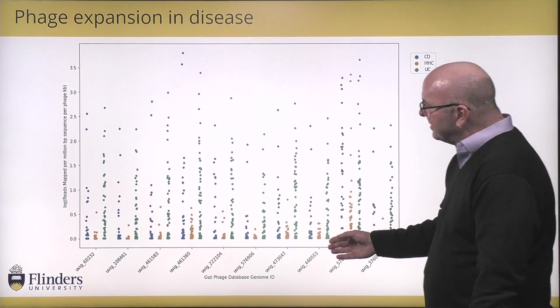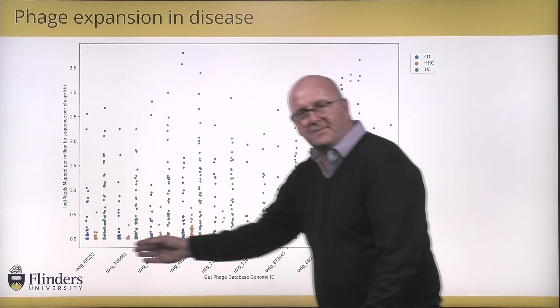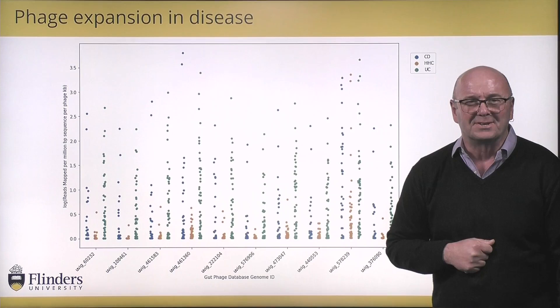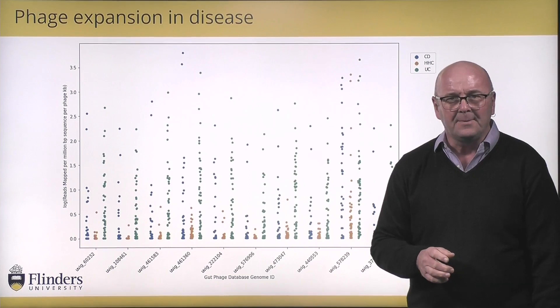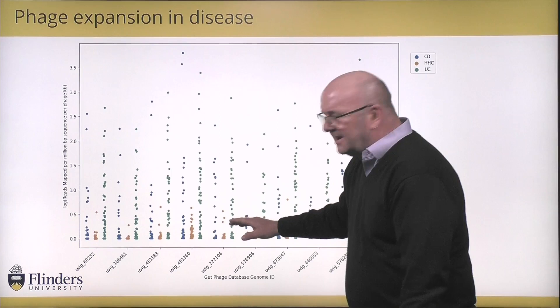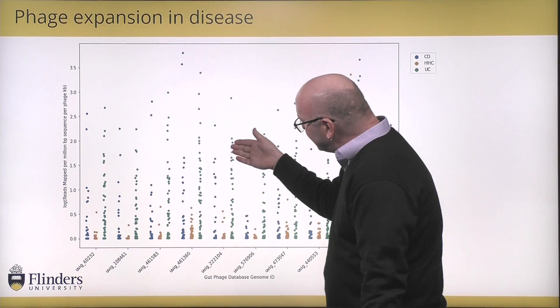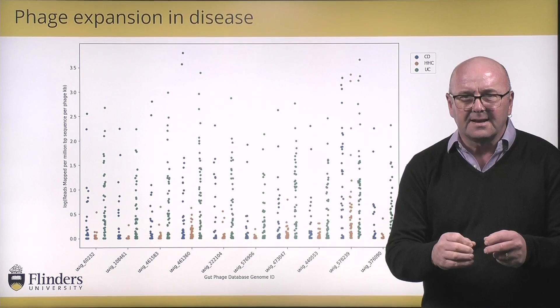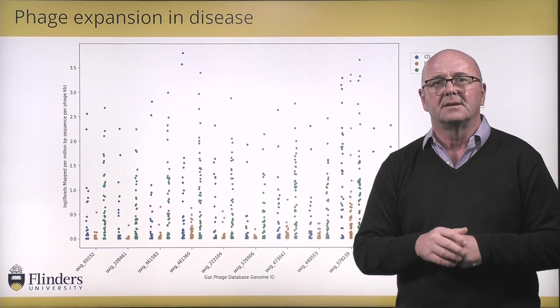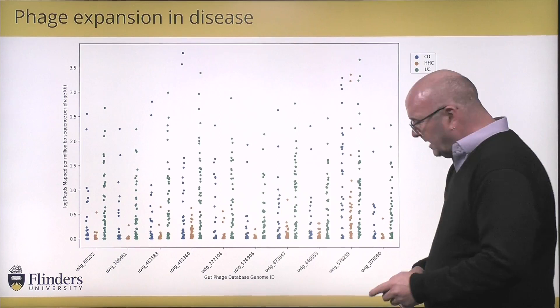We can take these 142,000 phages and plot them the same way — the same normalization on the y-axis and phages along the x-axis. Obviously I can't plot all 142,000, so I've plotted about 10 here. What you can see is that in this dataset there's a massive expansion of phages in either Crohn's disease or ulcerative colitis — yet again, a big expansion in disease, and we don't know why that's happening.